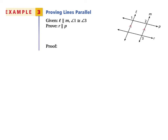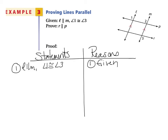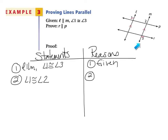We're given that L and M are parallel and angles 1 and 3 are congruent, and we have to prove that R and P are parallel. We start by stating L parallel to M, and angles 1 and 3 are congruent — both given. Because L and M are parallel and P is a transversal, we can say angles 1 and 2 are congruent by the corresponding angles postulate.